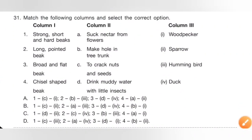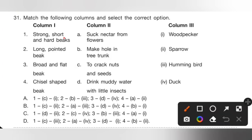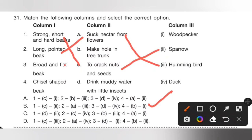Question 31 (Achiever section): Match the following columns. Strong, short, and hard beaks are used to crack nuts and seeds — example is sparrow. Long pointed beak is used for sucking nectar from flowers — example is hummingbird. Broad and flat beak is used to drink muddy water with little insects — example is duck. Chisel-shaped beak is used to make holes in tree trunks — example is woodpecker. Option B is the correct answer.